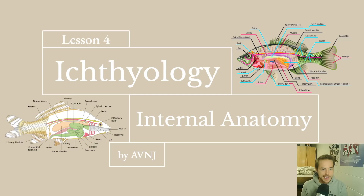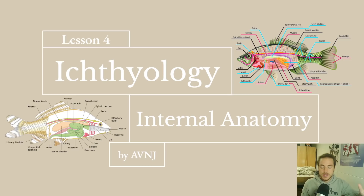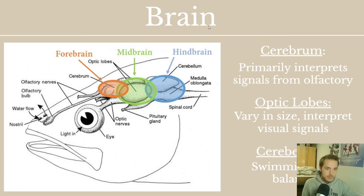Hello and welcome to the fourth lesson of this online free ichthyology class. Today we're going to be talking about internal anatomy. Last time we talked about external anatomy, which is just things you can see on the outside of the fish. Today we're going to talk about everything inside, as well as internal features of the external things. We'll cover organs and sensory, the skeletal system, the musculature system, and the circulatory system. Respiration, reproduction, and locomotion will have their own lectures, but by the end of today you could theoretically dissect a fish, point everything out, and understand the basic function of everything you see.